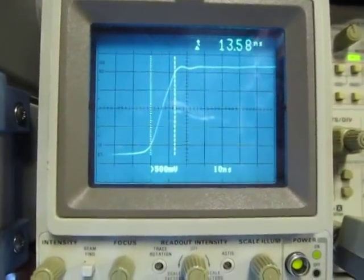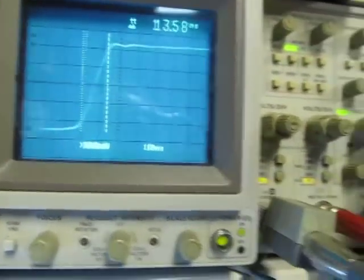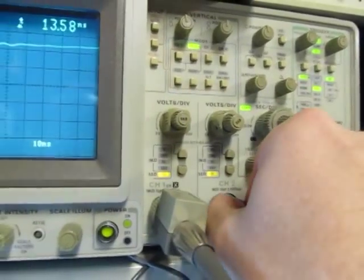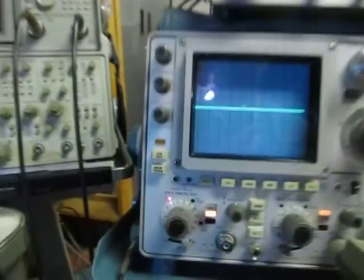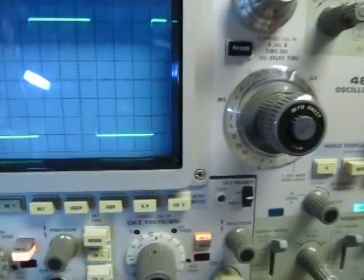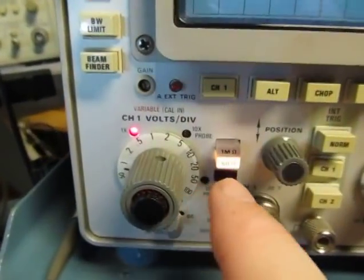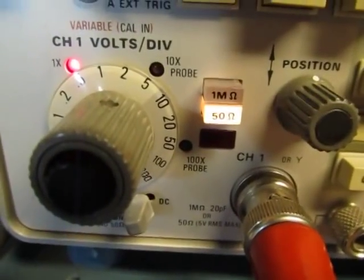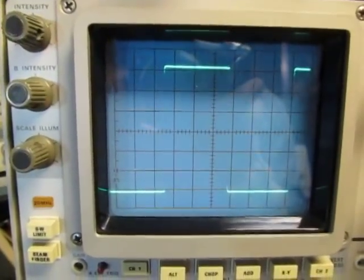So the way we typically got around that was oftentimes using the dual delayed time base. Let's go back over to this old 485. This one doesn't have the cursors built in. This does have a way of terminating to 50 ohms, so I'm going into a 50 ohm input here. There's that same pulse.